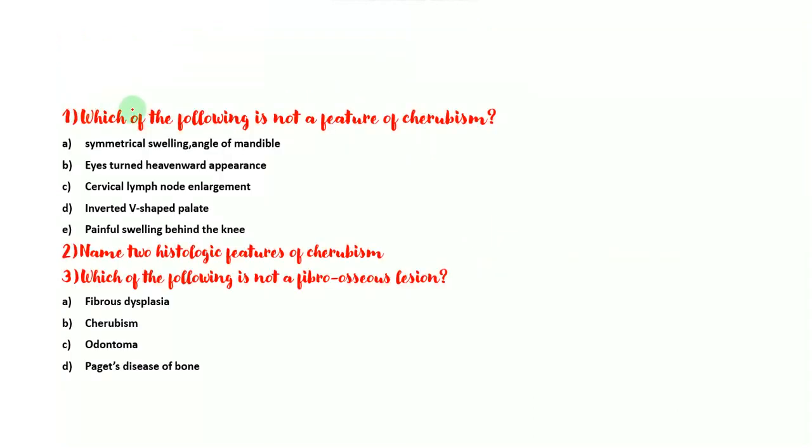Now I have some MCQs for you. Which of the following is not a feature of Cherubism? Is it symmetrical swelling at the angle of mandible? Is it eyes upturned towards heaven appearance? Cervical lymph node enlargement? Inverted V-shaped palate? And painful swelling behind the knee? One of these I have not talked about. The second thing is name two histological features of Cherubism. You can easily tell it by just looking at the word fibro-osseous lesion. And the third thing is which of the following is not a fibro-osseous lesion? This one you might have to read up a bit. Make sure to answer this.